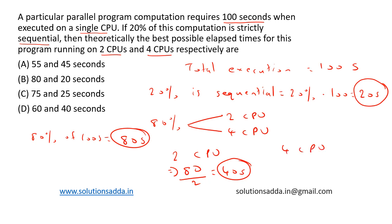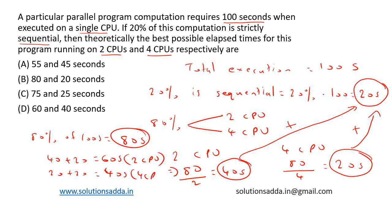And within 4 CPUs it can be 80 by 4, so it can be 20 seconds. So the question is asking what is the best possible elapsed time. So we can have 40 plus this 20, this 20 sequential that cannot be avoided, which is equal to 40 plus 20 equal to 60 seconds on 2 CPUs. And 20 plus 20, that is equal to 40 seconds on 4 CPUs. So based on the options, option D, 60 and 40 seconds, is the right answer.